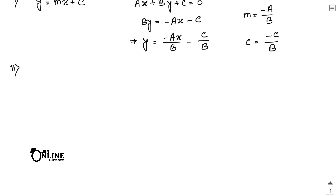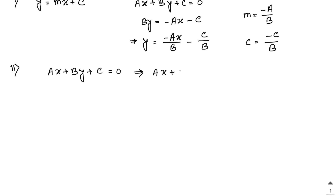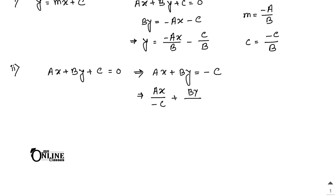Next, to reduce the general equation to intercept form: ax + by + c = 0 becomes ax + by = -c. If c ≠ 0, divide each term by -c: (ax)/(-c) + (by)/(-c) = 1.